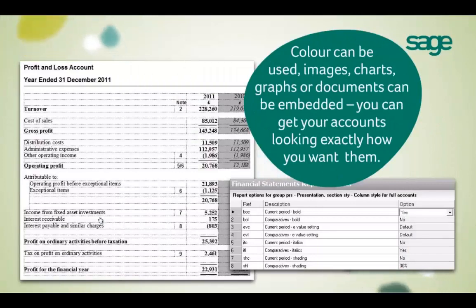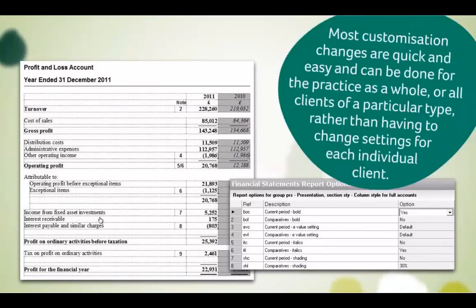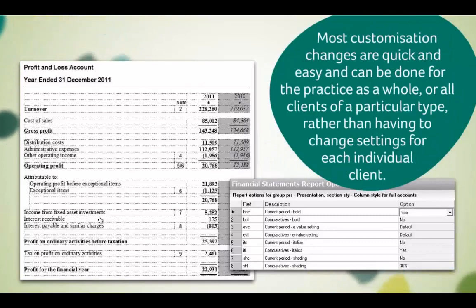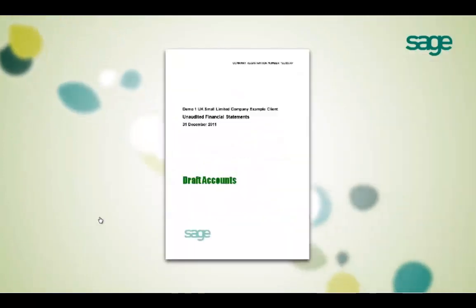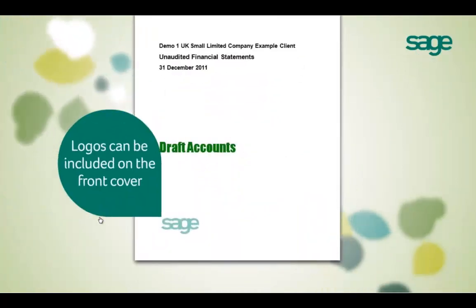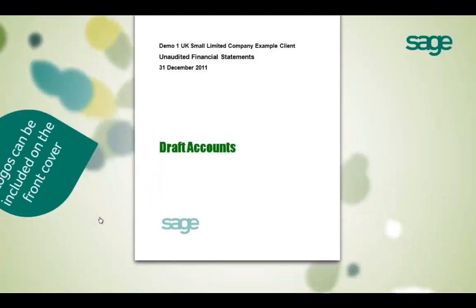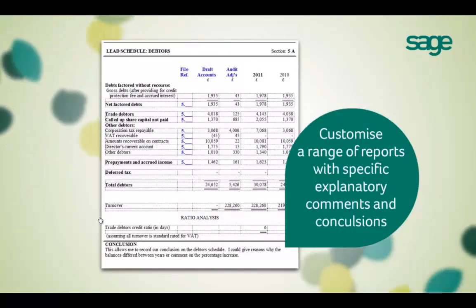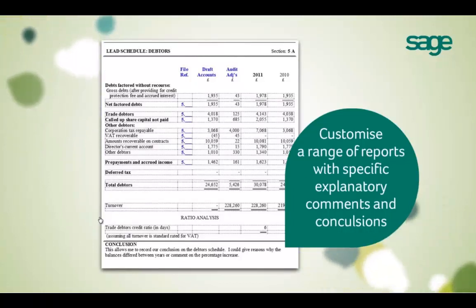Colour can be used as well as embedding images, charts, graphs or documents, so they end up looking exactly as you want and are a good reflection of your practice's professional style. You'll find it easy and quick to set your practice or client style and you only have to make these changes once. As an example, we've put the Sage logo on the front page of the accounts — all you need is an image file such as a JPEG. This may save you the cost of printing the first page on letter-headed stationery. Your additional reports, such as our lead schedules, can also be tailored with specific explanatory text and conclusions.